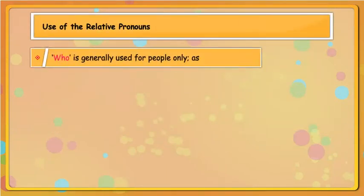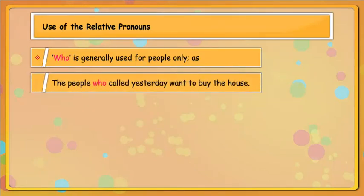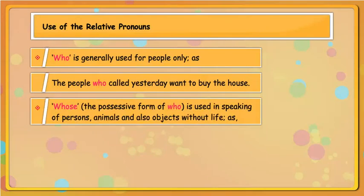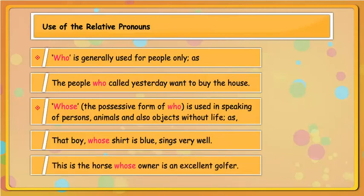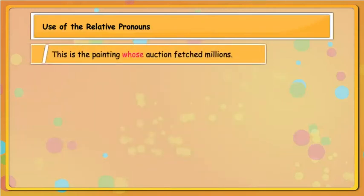Use of the relative pronouns. 'Who' is generally used for people only. As: the people who called yesterday want to buy the house. 'Whose', the possessive form of 'who', is used in speaking of persons, animals, and also objects without life. As: that boy whose shirt is blue sings very well. This is the horse whose owner is an excellent golfer. This is the painting whose auction fetched millions.